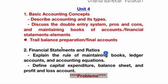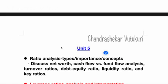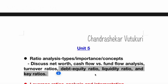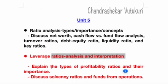If you are poor at problem-solving, ensure you read units 1, 2, and 3 thoroughly first. Unit 5 covers ratio analysis — its types, importance, and concepts — as both short and long questions in 10A/B. Topics include: net worth, cash flow versus fund flow analysis, turnover ratios, debt equity ratio, liquid ratio, and key ratios. Any ratio may be asked — it could be a one-mark question asking you to define one ratio, or a five-mark question asking you to compare ratios. Leverage ratio analysis, interpretation, and related problems are gunshot questions. Units 4 and 5 will definitely include problems.